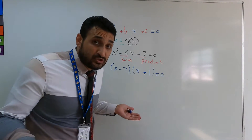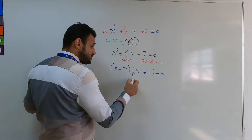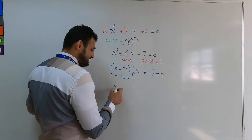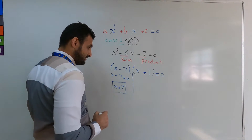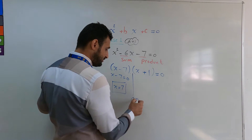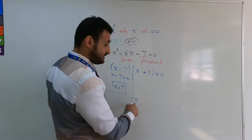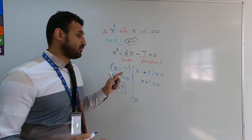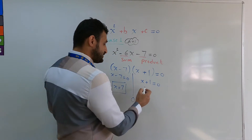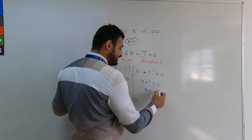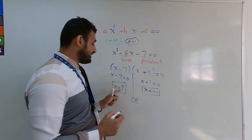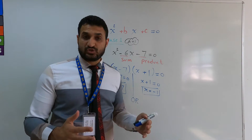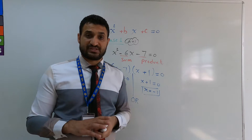Now we have two brackets multiplied together equaling zero. Either x − 7 = 0, so x = 7, or x + 1 = 0, so x = negative 1. The solutions are x = 7 and x = negative 1. These are the two roots.